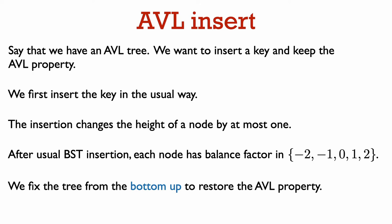Let us say we have an AVL tree. We know that for every node in the tree, the heights of its left and right child differ by at most one. Recall that we call the balance factor of a node the height of its right child minus the height of its left child. To insert a new key into an AVL tree, we first insert it in the usual way to insert a key into a binary search tree.